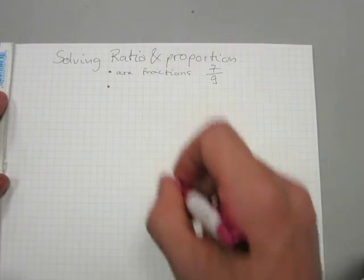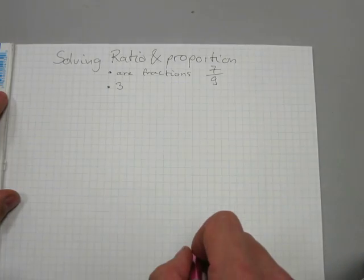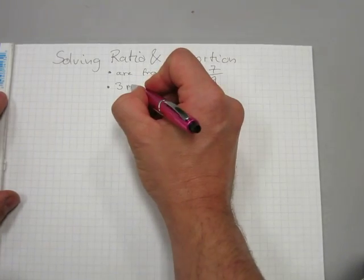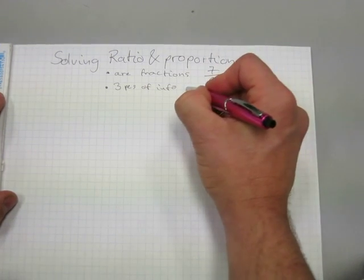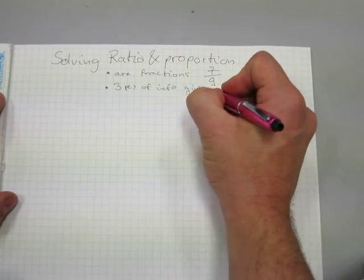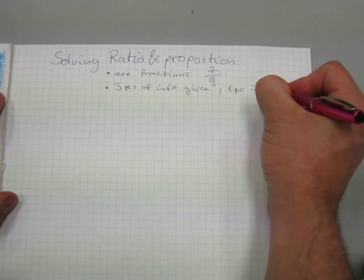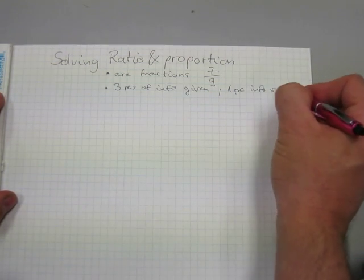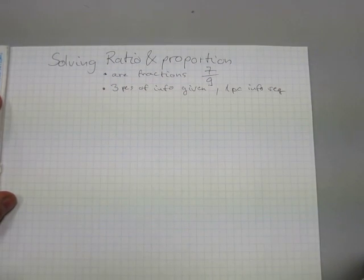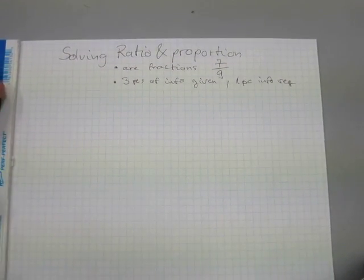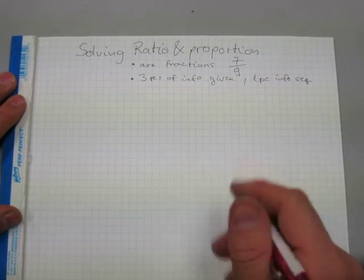Another reminder is that with ratio and proportion, three pieces of information are always given and one piece of information is to be found out as the requested information — the unknown. Let's get started with ratio and proportion and equivalent fractions.